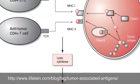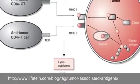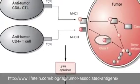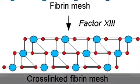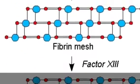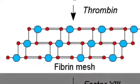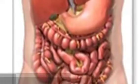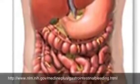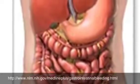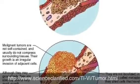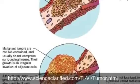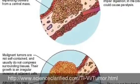Tumor antigens are viruses that can cause tumors. Dimers are molecules consisting of two identical simpler molecules. Gastrointestinal is relating to the stomach and intestines. A malignant tumor is the cancerous abnormal growth of body tissue.